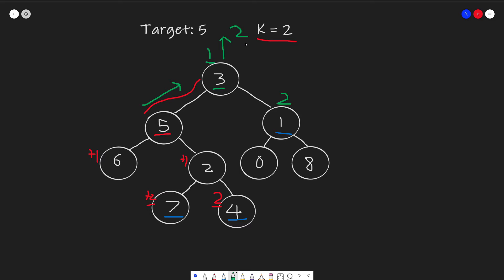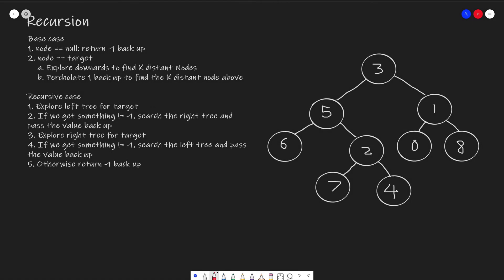That is the high-level intuition of how we get the answer. To formalize what we discussed: for our recursion we have base cases and a recursive case. We have two base cases. The first is if the node we're traversing is null — we return negative 1. The second is when our node equals our target.